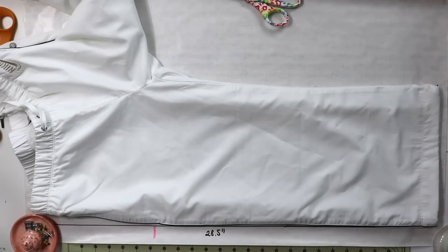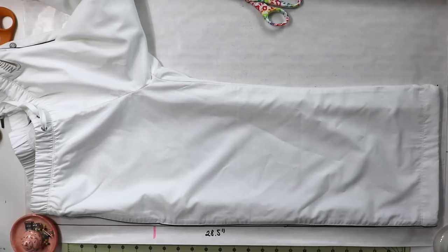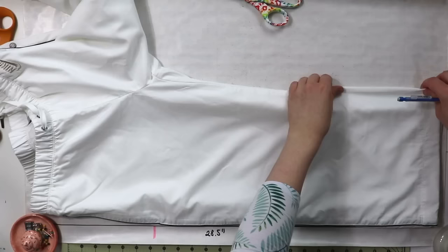Then what you're going to do is you're going to take a pencil not a sharpie, a pencil, and you're going to start marking where the inner leg seam of the front piece goes.